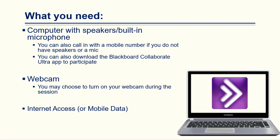In order to participate in an Ultra session, you'll need a computer with speakers and perhaps a built-in microphone. If you don't have these, you can also call in with a mobile number. You can also download the Blackboard Collaborate Ultra app to participate. It is helpful if you have a webcam, though you don't have to have one. You'll also need internet access or mobile data, either on your laptop or your phone.